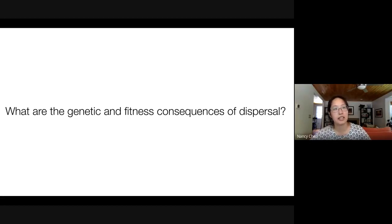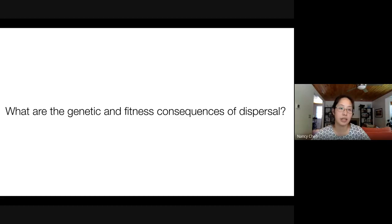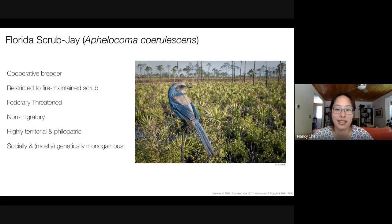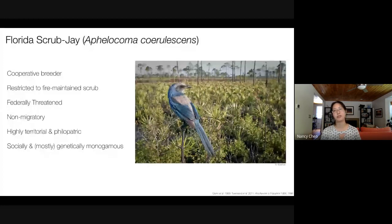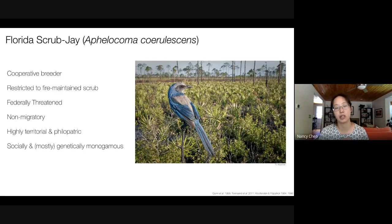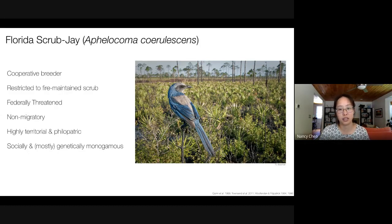What I'm going to do today is summarize some of the work that our lab has done looking at genetic and fitness consequences of dispersal among populations. The system we use to ask these questions is the Florida scrub jay — a beautiful blue cooperative breeder where individuals delay dispersal and stay home to help their parents raise future offspring. These birds are restricted to fire-maintained scrub habitat in Florida that has been largely destroyed due to anthropogenic pressures, and this bird is federally threatened.